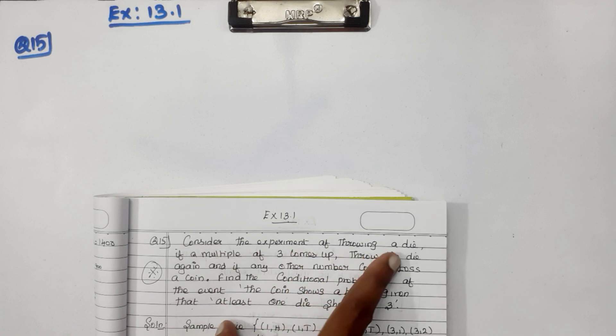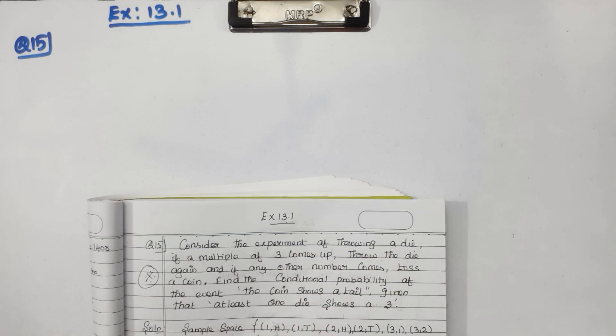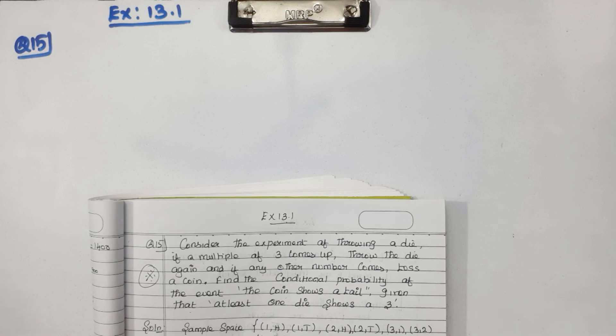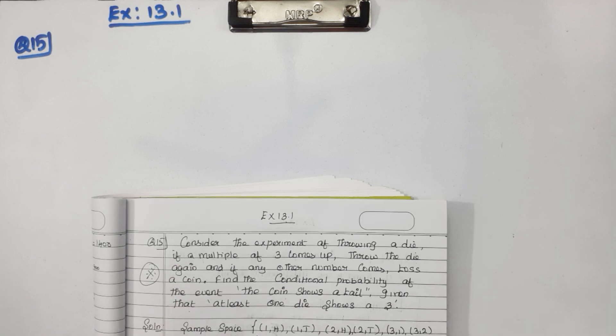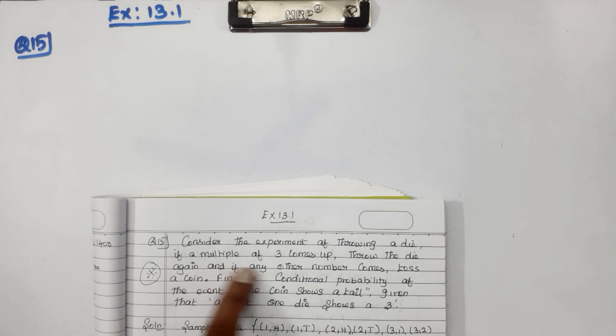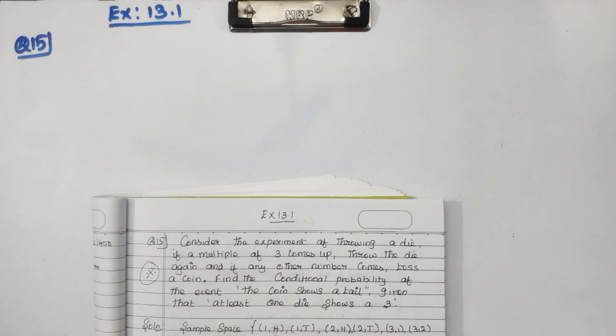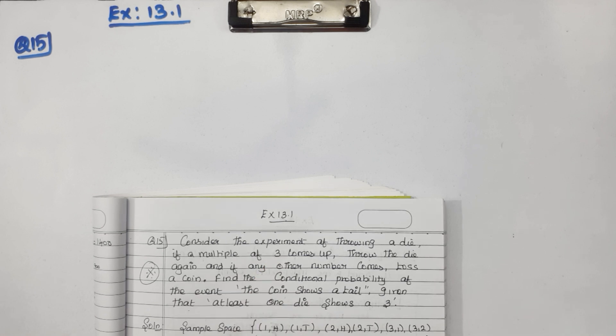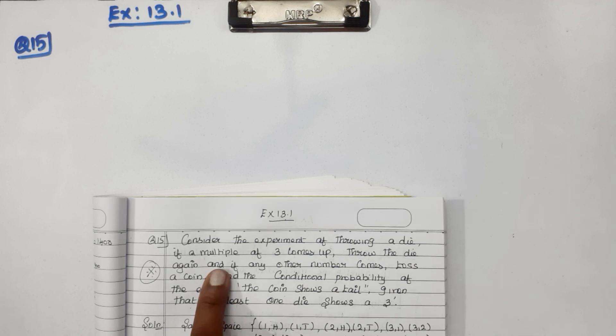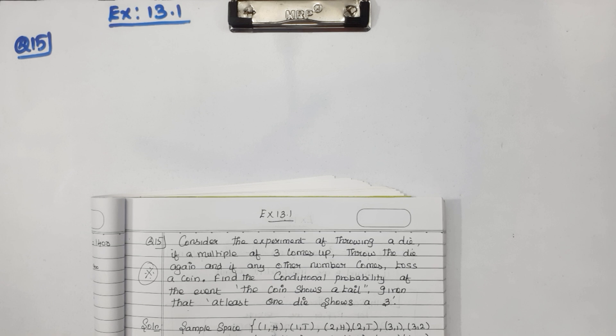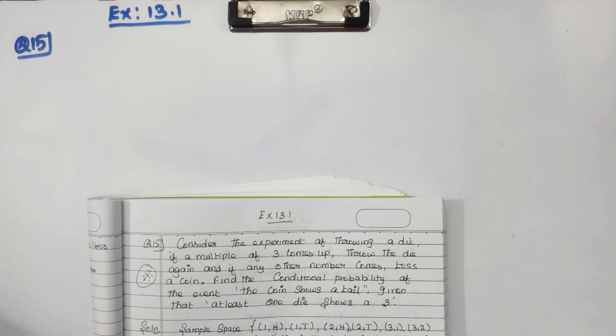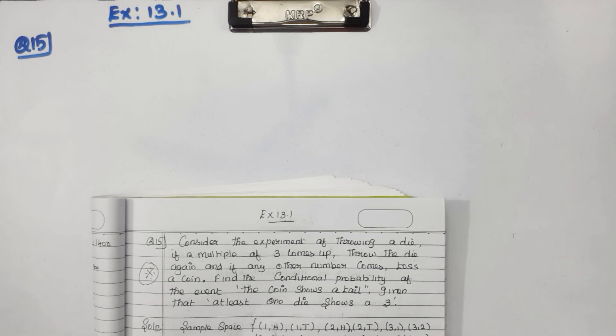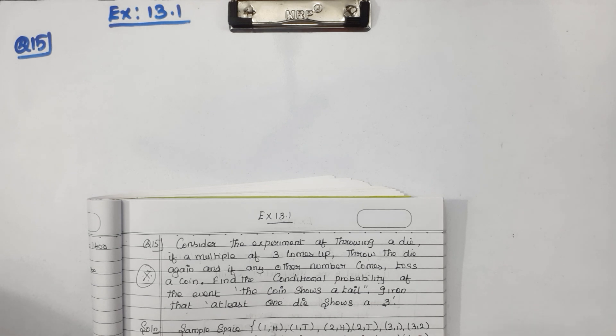Consider the experiment of throwing a die. The sample space is 1, 2, 3, 4, 5, 6. If a multiple of 3 comes up (3 or 6), throw the die again. If any other number comes (1, 2, 4, 5), toss a coin which has head and tail.